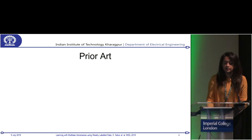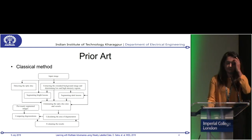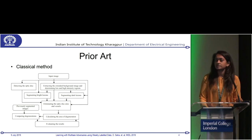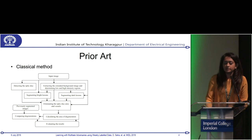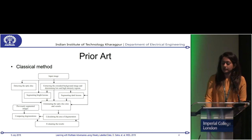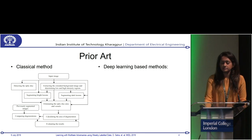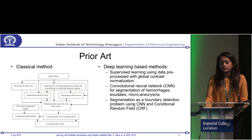Prior art in this field for segmenting all six classes uses a classical step-by-step method: first it segments the high intensity diseases, then the dark lesions, then the optic disc, and so on — so it's not an end-to-end method. In deep learning based methods, there is no single method that has segmented all of these classes using just one segmentation network.